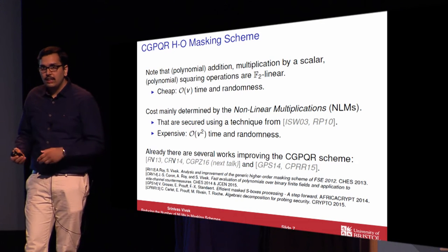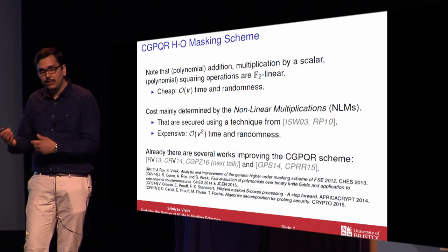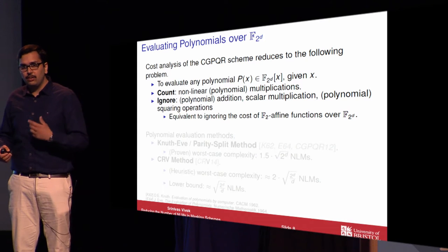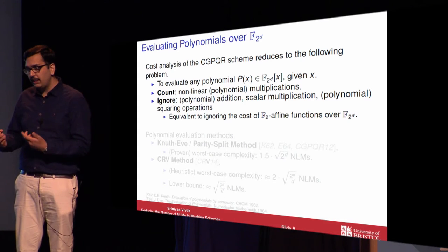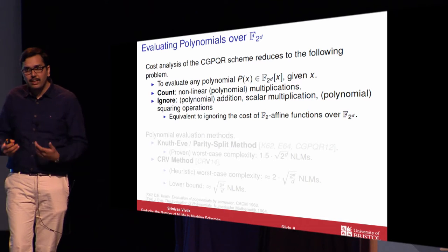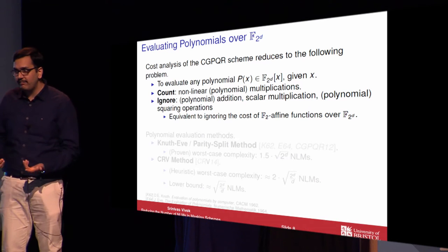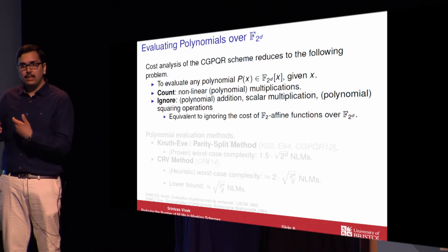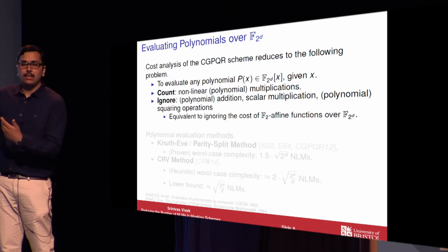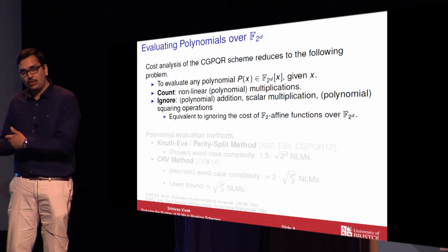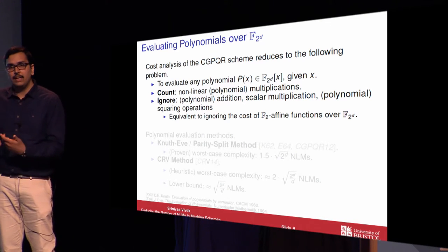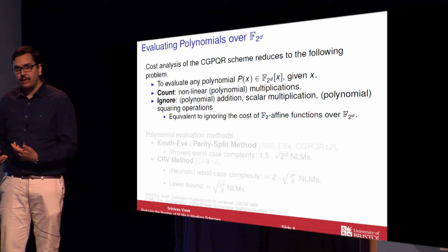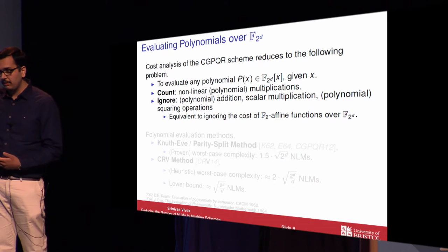There are already several improvements to the original CGPQR scheme. The cost analysis reduces to the problem of evaluating polynomials over binary finite fields. The cost model we follow is to count the non-linear multiplications — multiplications which are not squarings — and we ignore the cost of linear operations such as addition, scalar multiplication, and squaring, because they are relatively cheap compared to a non-linear multiplication.